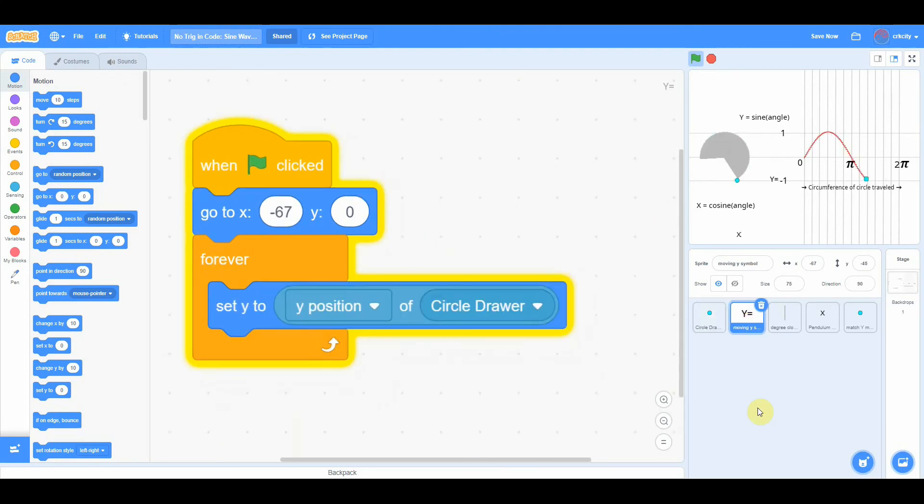And from that we can learn a lot about the sine function, but also the cosine function, which is the X position. X is the cosine of the angle.